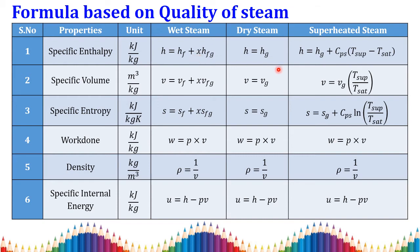For dry steam, substituting x equal to 1 gives h equal to hg. For superheated steam, h equals hg plus Cp times (T_superheated minus T_saturation). For specific volume: in wet condition, v equals vf plus x times vfg; for dry steam, v equals vg; for superheated steam, v equals vg times (T_superheated / T_saturation). Similarly for specific entropy: s equals sf plus x times sfg for wet steam.